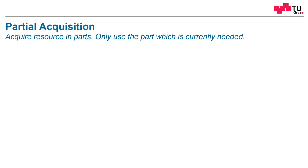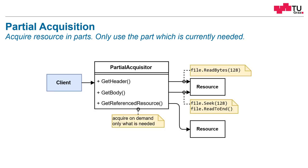How can this look like? For example, like this. We, as a client, have two possibilities of accessing a resource. First, we could get the header of the resource, which just reads the first 128 bytes. And if this is the resource we want to use, we can get the body, which reads the remainder of the resource. Later on, we can access the resource again by calling the function getReferencedResource, so we can get the resource as a whole.